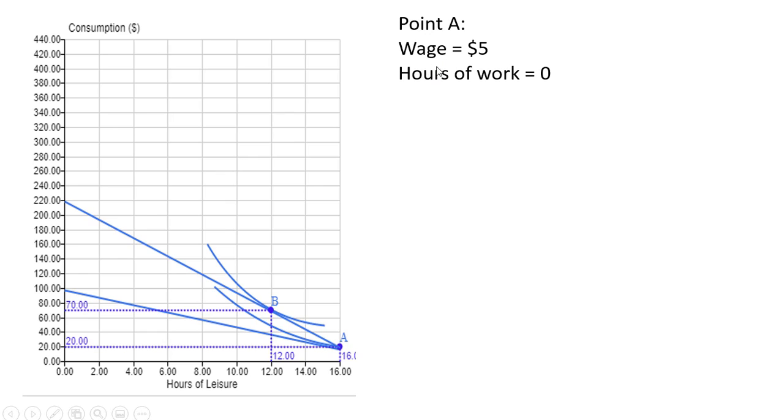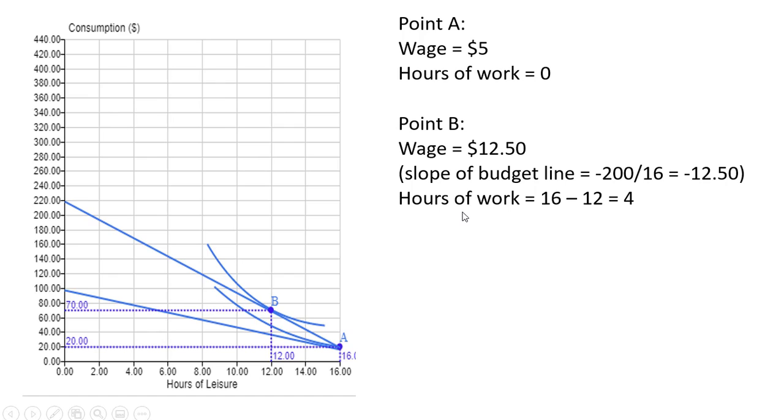So at point A, again, from the first slide, wage was $5. The person got on their highest indifference curve possible, which was at the endowment point where they chose not to work. At point B, the wage here is now $12.50. So all we're going to do is calculate the slope of this budget line here. So 220 minus 20, we've got a rise here of 200, and we're going to divide it by the run here of 16. So the slope of the budget line is minus 12.5, which means that the wage is $12.50. As I said before, hours of work here is just going to be 16 minus 12, or 4.